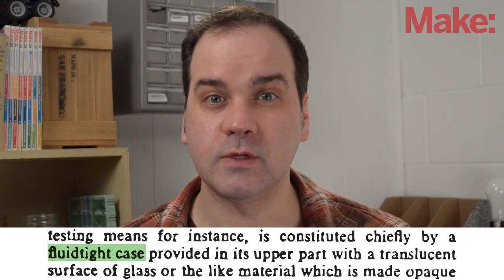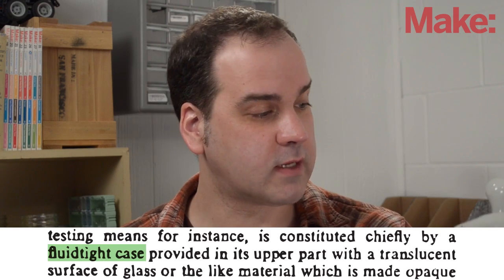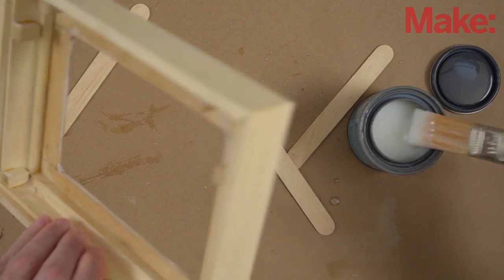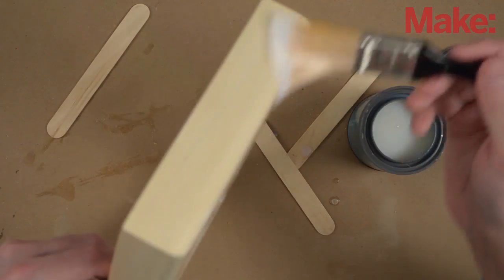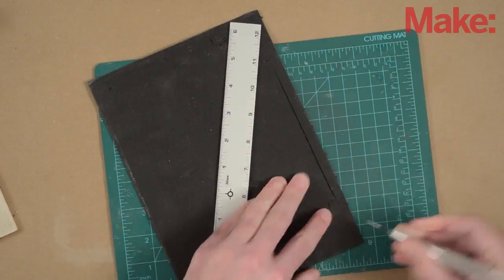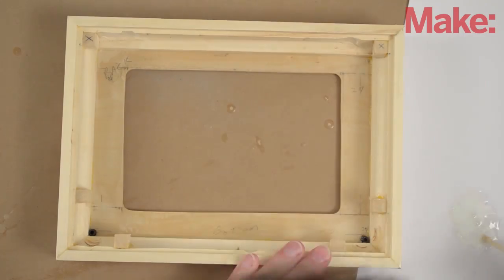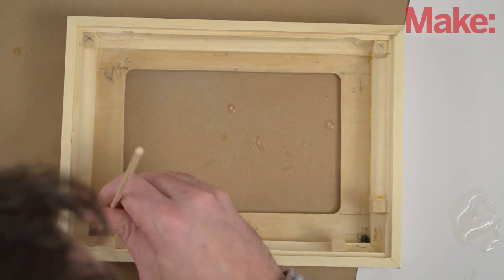The patent calls for a fluid tight case. This is important because the aluminum powder we're using is incredibly fine. It can escape from the smallest hole. After sealing the wood with polyurethane sealant, I cut a gasket to keep the powder from escaping around the back panel. I drill holes for the control knobs and then attach bushings and more custom gaskets around the holes.